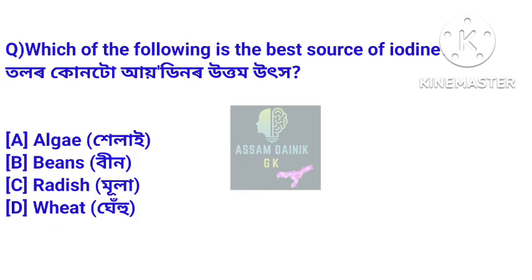Which of the following is the best source of iodine? Answer: Bean. Bean is considered a good source of iodine.